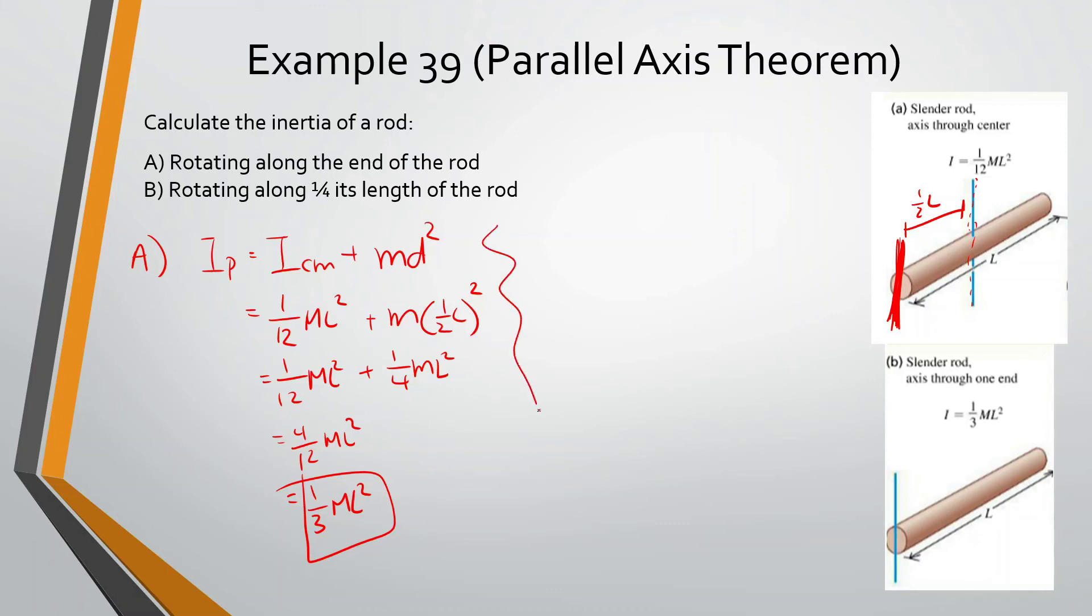Now what we want to do is we want to get it at a point one fourth its length of the rod. So now we don't want it at the end, we want it rotating one fourth right here. We also know for this, it's going to be a lot harder for it to rotate. This is one third ml squared, while this is one twelfth ml squared. It's always going to be easier at the center. So whenever it's not in the center of mass, it's going to be harder to rotate.